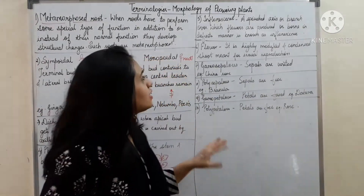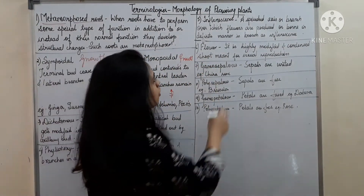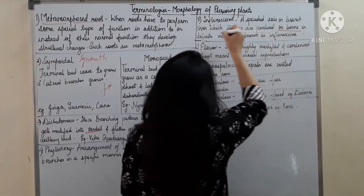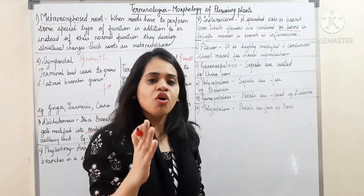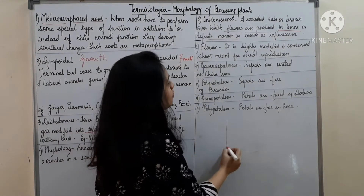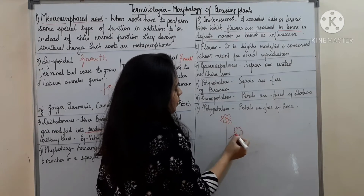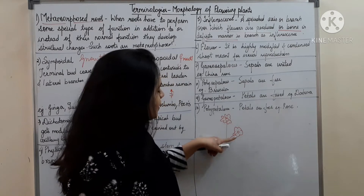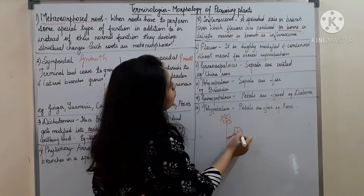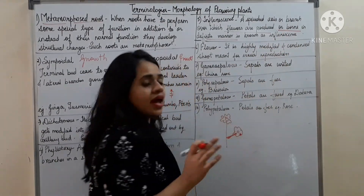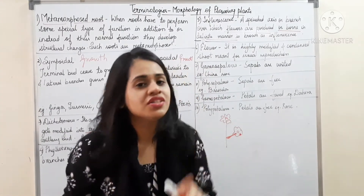Next comes inflorescence. What is inflorescence? It is a specialized axis or branch over which flowers are produced and borne in a definite manner. The axis on which the flower develops is called the inflorescence, and the flowers are arranged on it in a definite manner. There are also types of inflorescence.